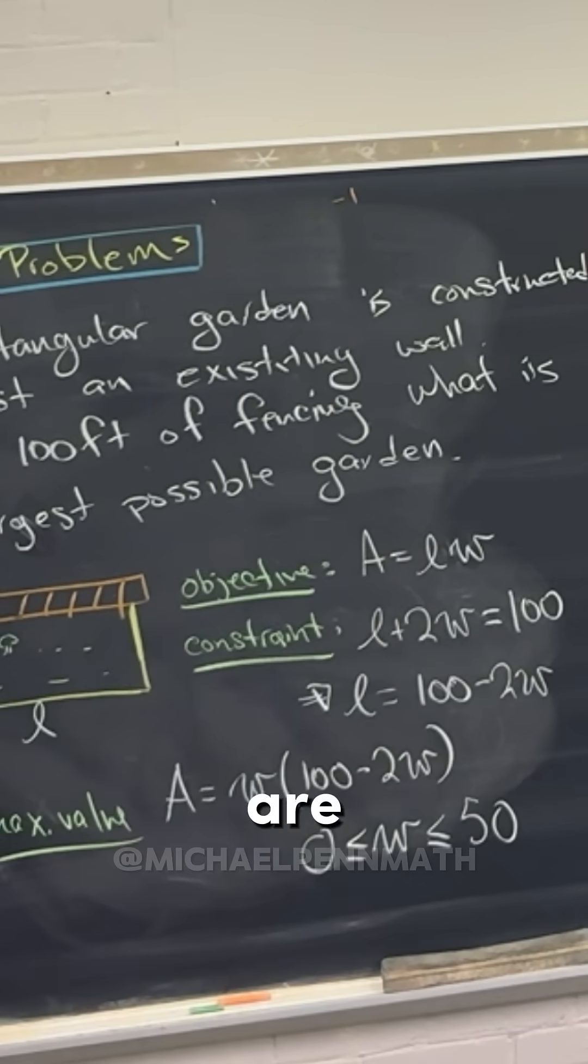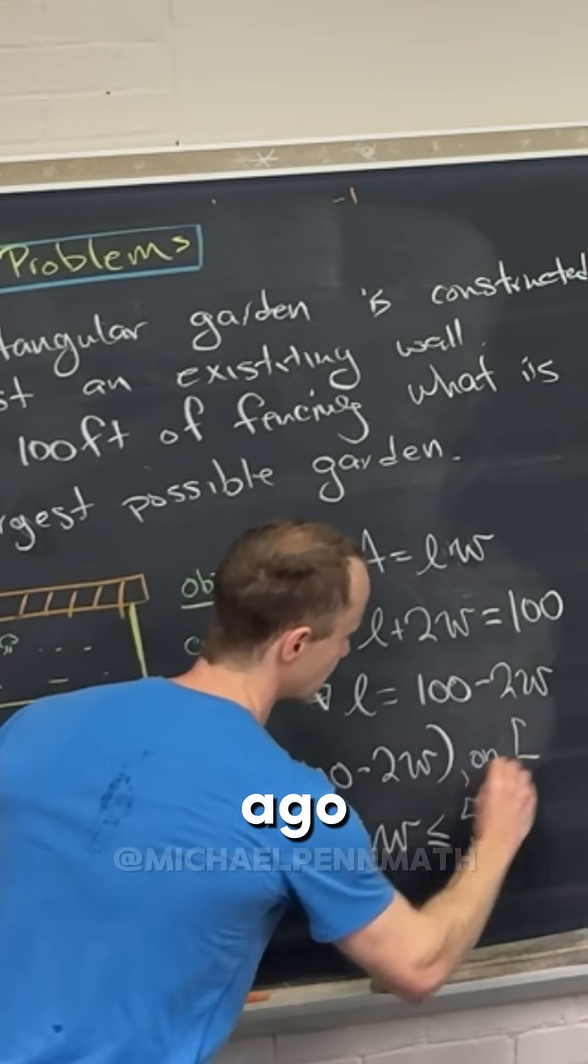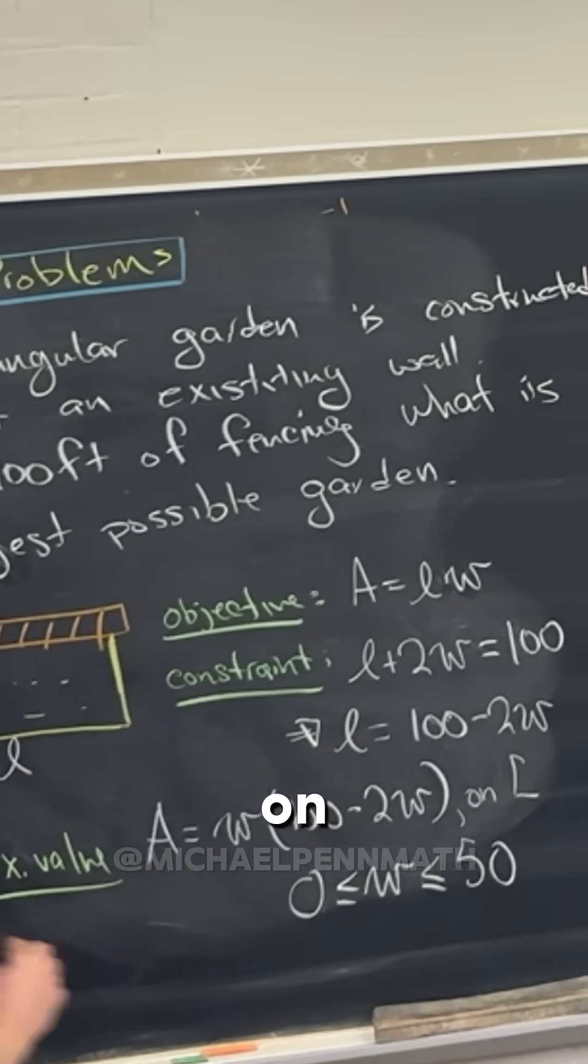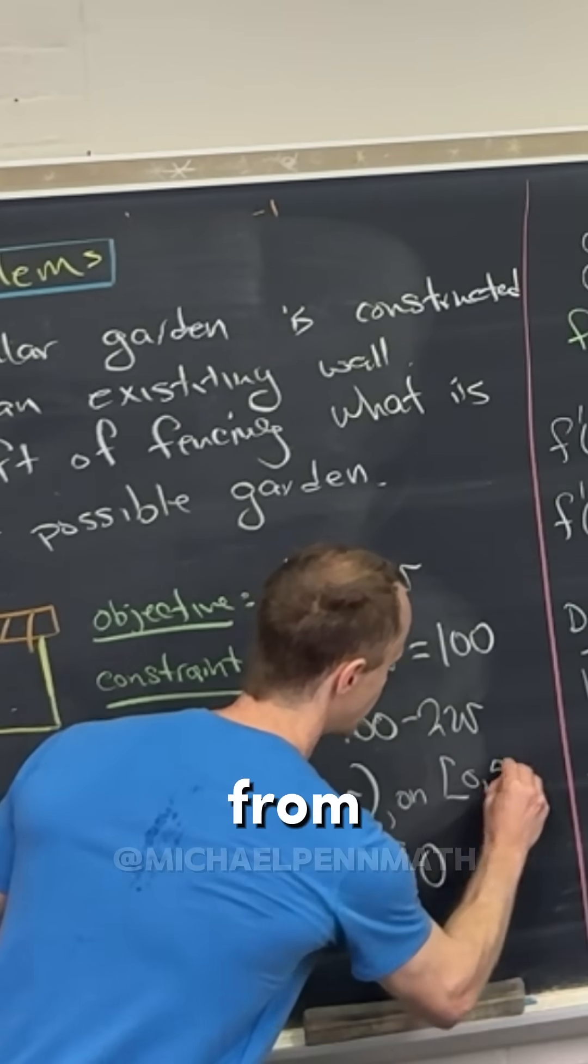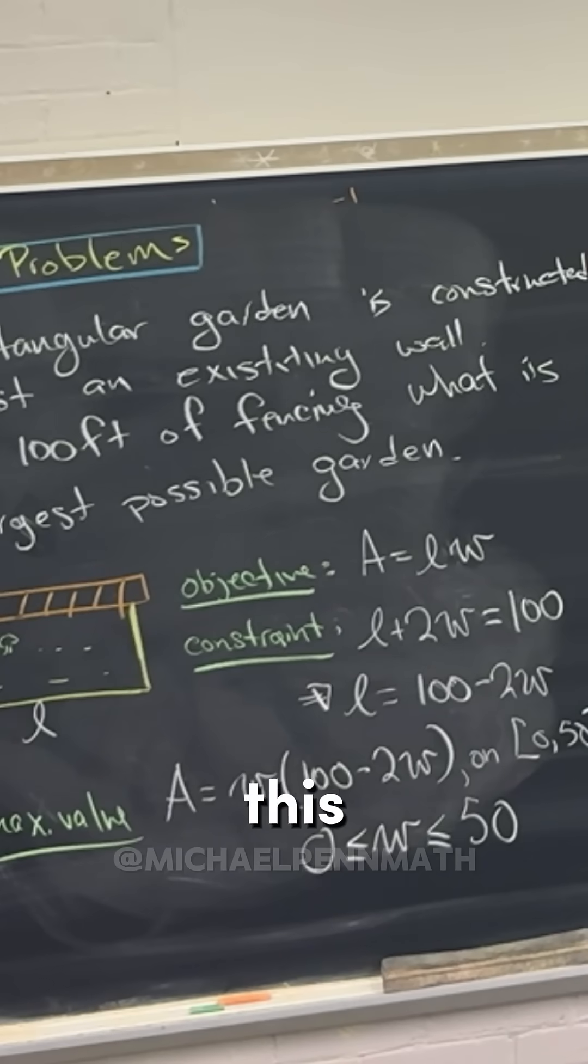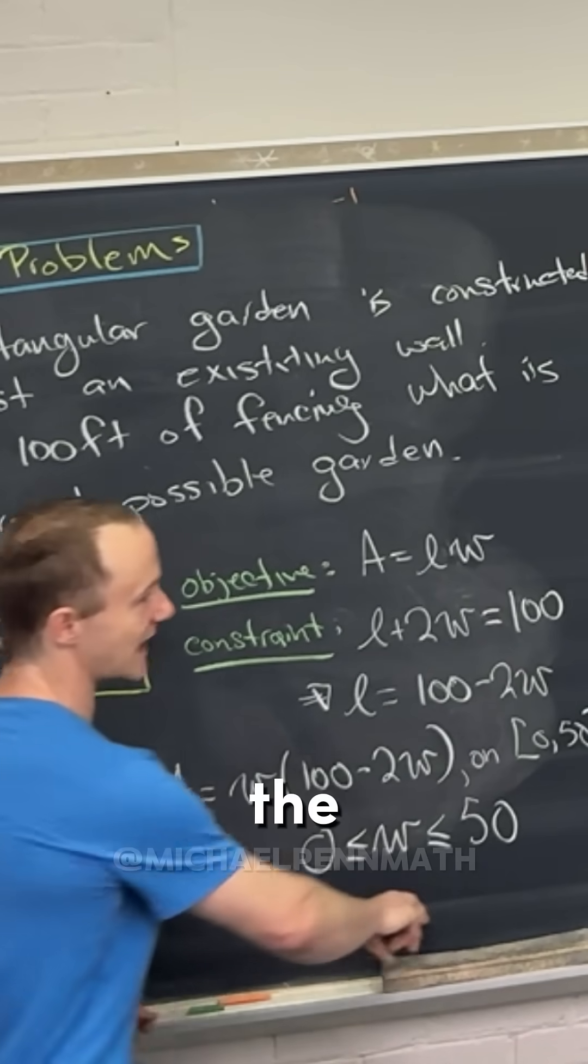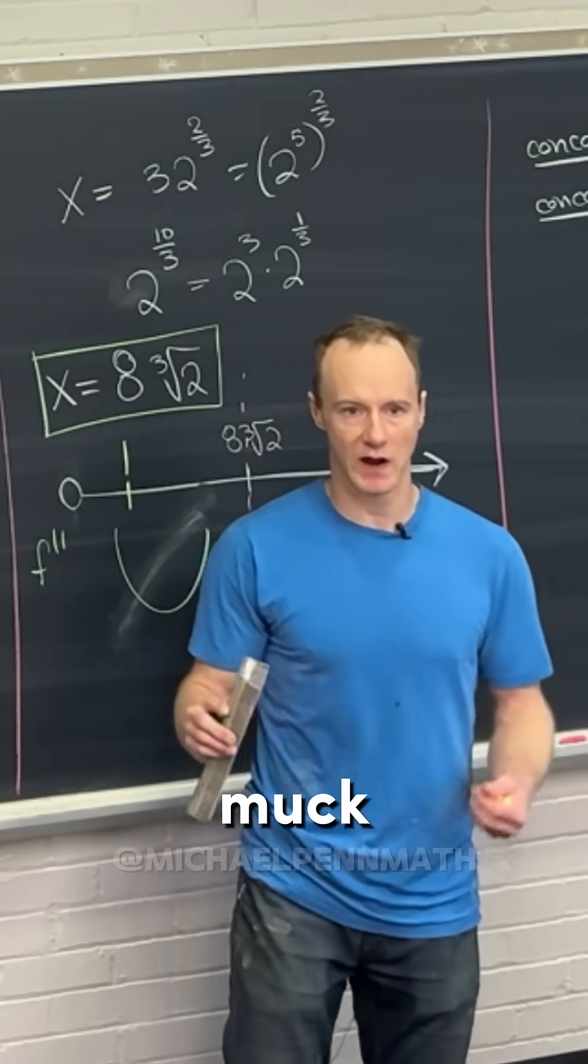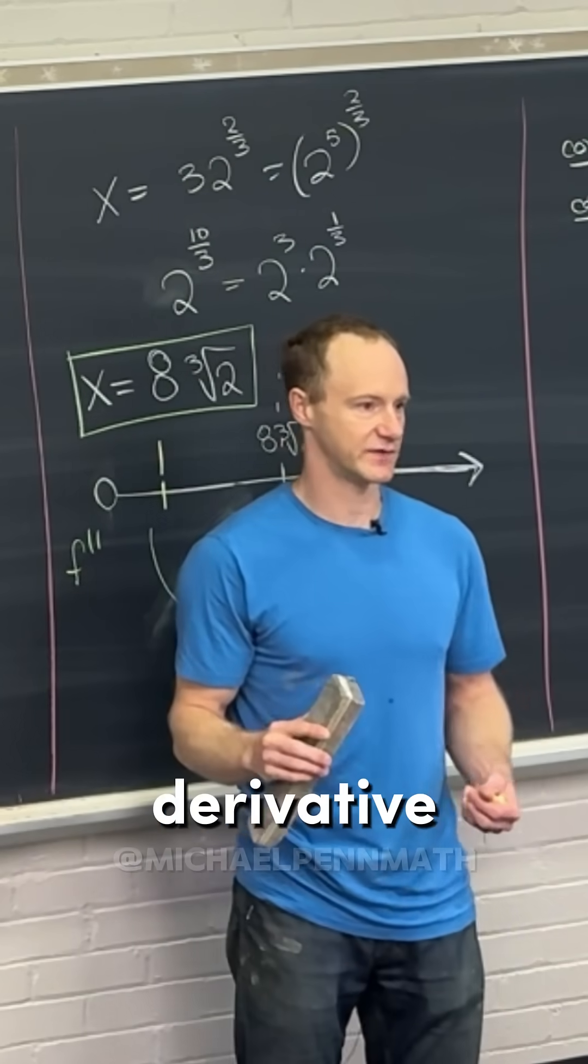So those are your values of W. Perhaps in the language of a couple of days ago, that would be finding the maximum value of this equation: A equals W times (100 minus 2W) on the closed interval from 0 to 50. This little step of determining the interval actually saves us down the line because we don't have to muck around with the first or second derivative test.